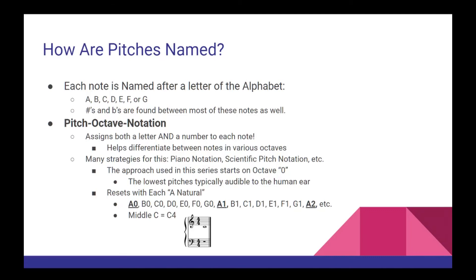There are many different systems in place to name these pitches, but the one used throughout this orchestration series starts at octave zero and moves up from there, where octave zero refers to the lowest pitches that are typically audible to the human ear. This cycle restarts with every A — for example, A natural, B natural, C natural, etc., before starting over with A1, B1, C1, and so on. This can seem a little complicated at first, but the more you use it, the more useful this approach becomes. As a reference point, middle C in this system is named C4, or C natural in octave four. Once we have a firm grasp on pitch octave notation, we can fully understand both how transposing works and why it's necessary.